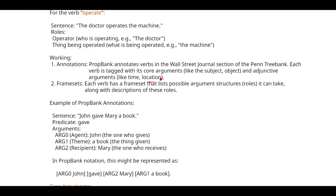The second key element is framesets. Whatever verb you annotate with arguments, you next create a frameset — each verb has a frameset that lists possible argument structures along with descriptions of those roles.